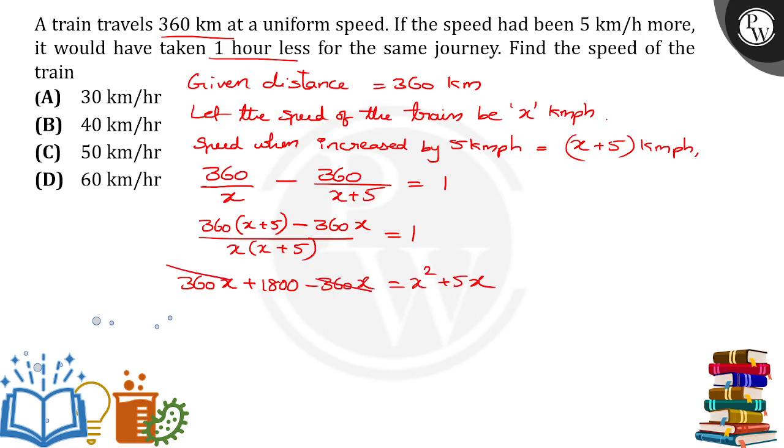These two will get cancelled. We will get x squared plus 5x minus 1800 is equal to 0.